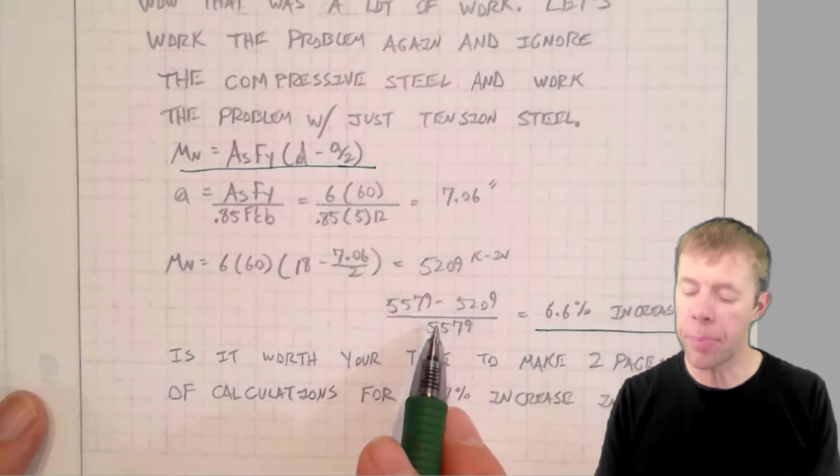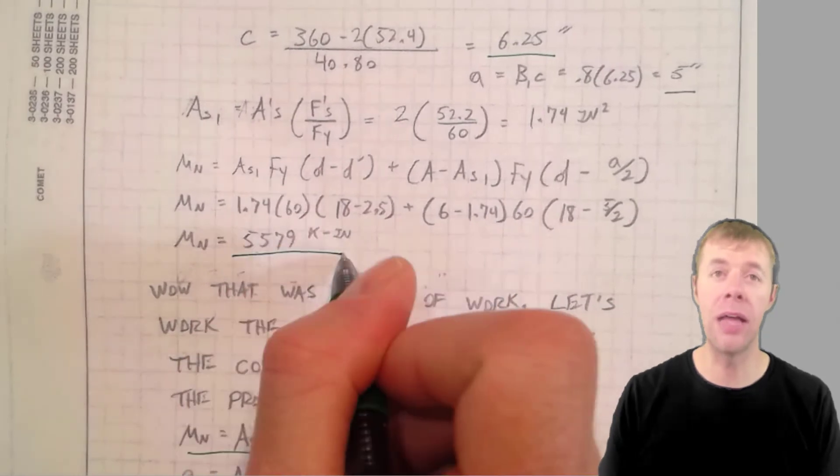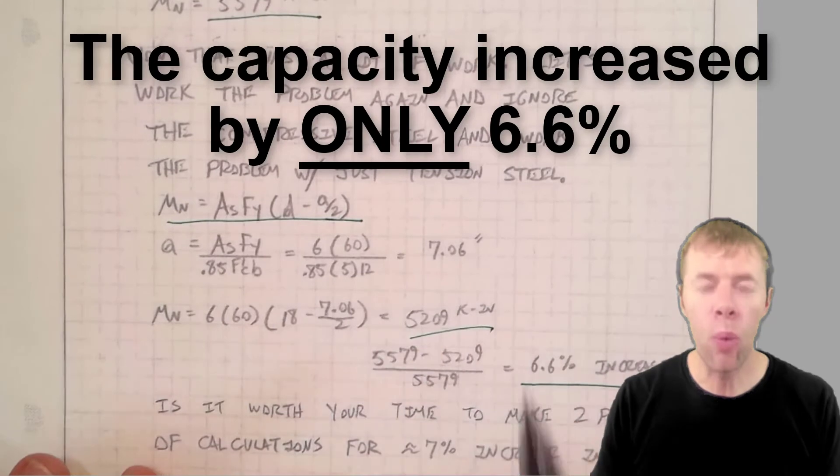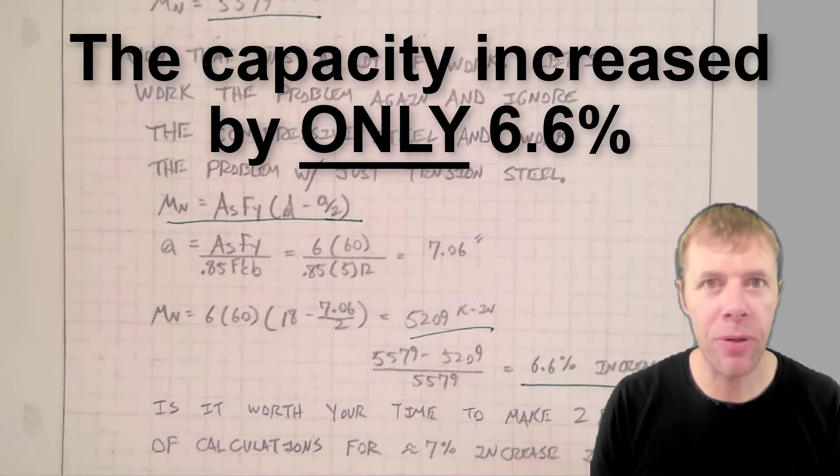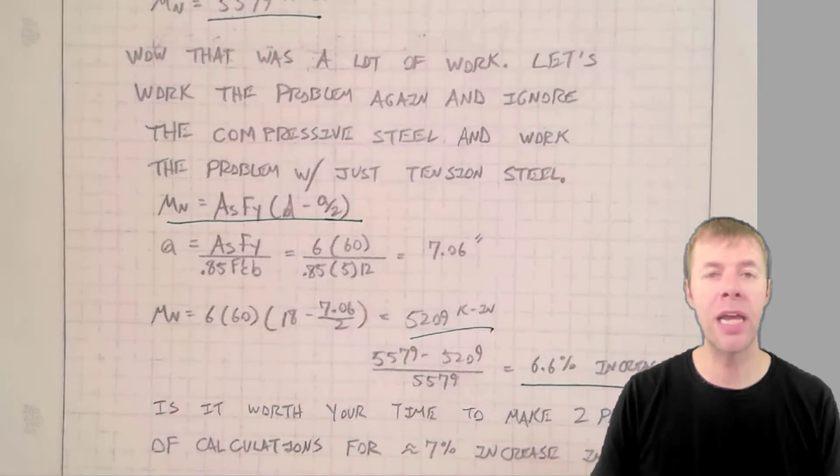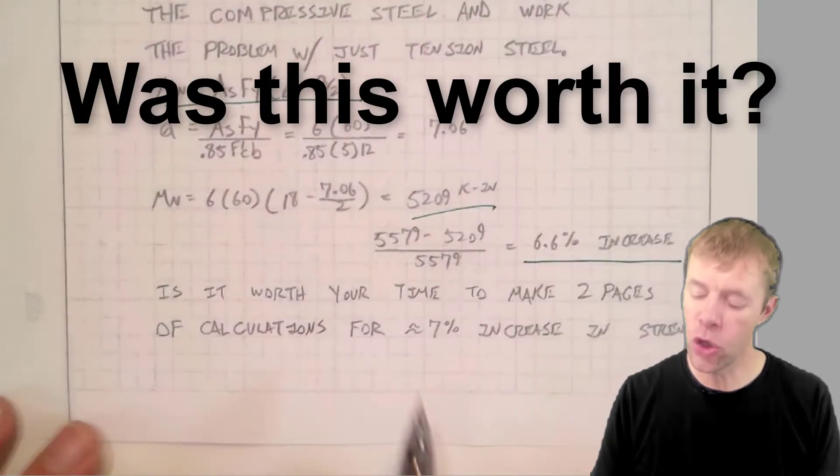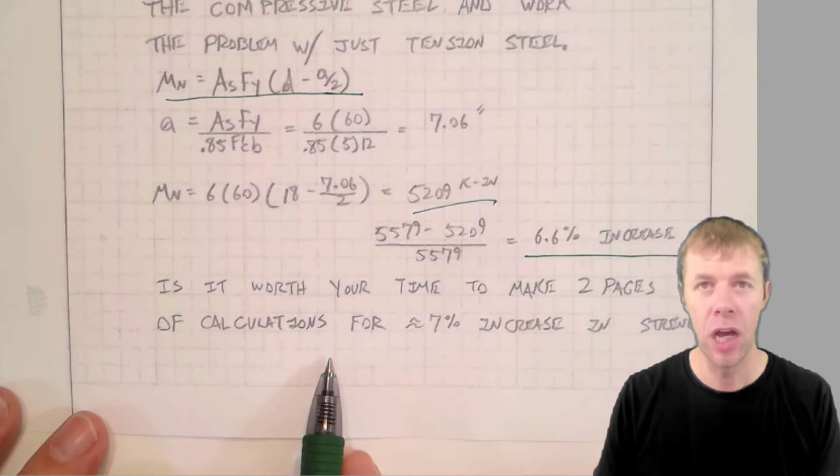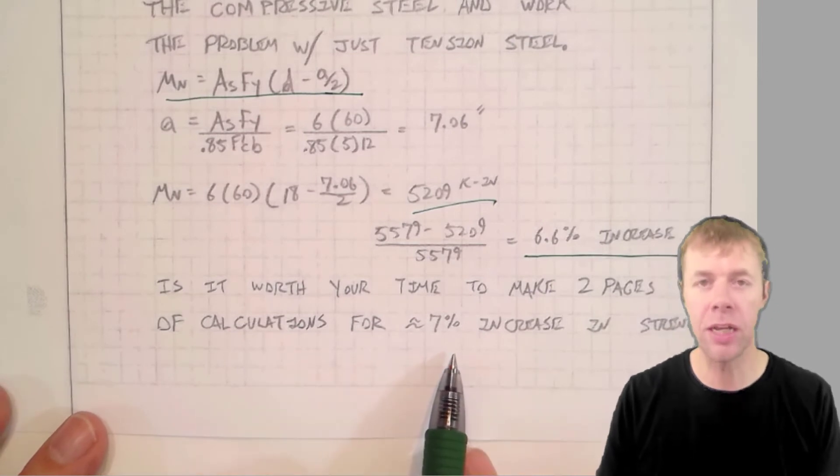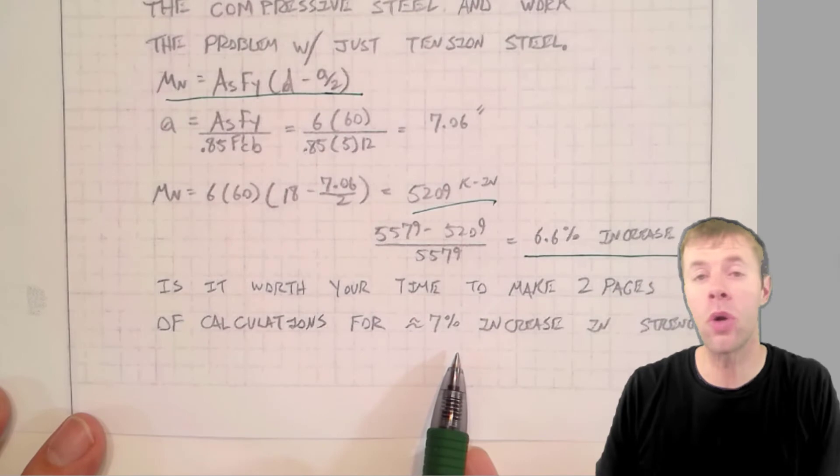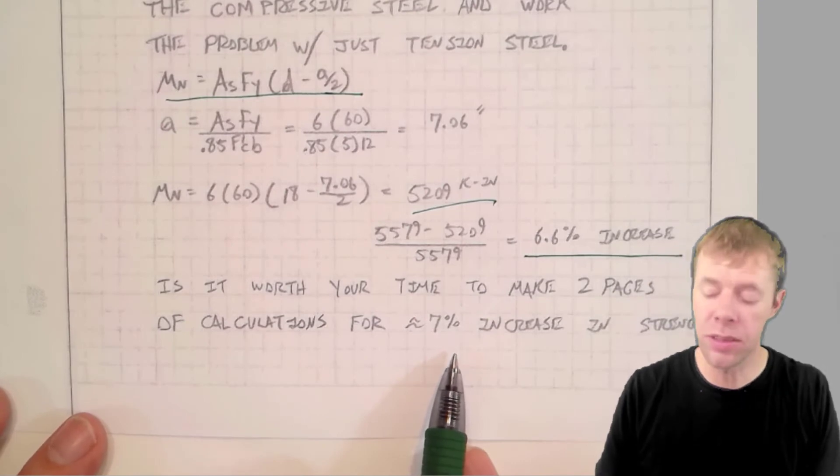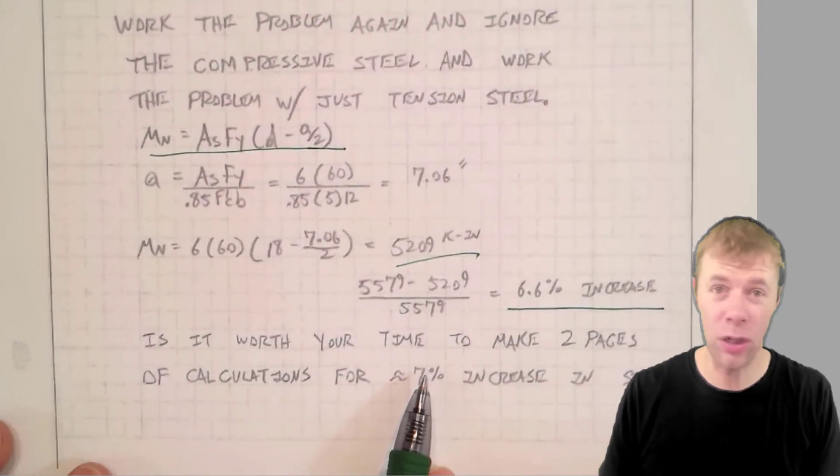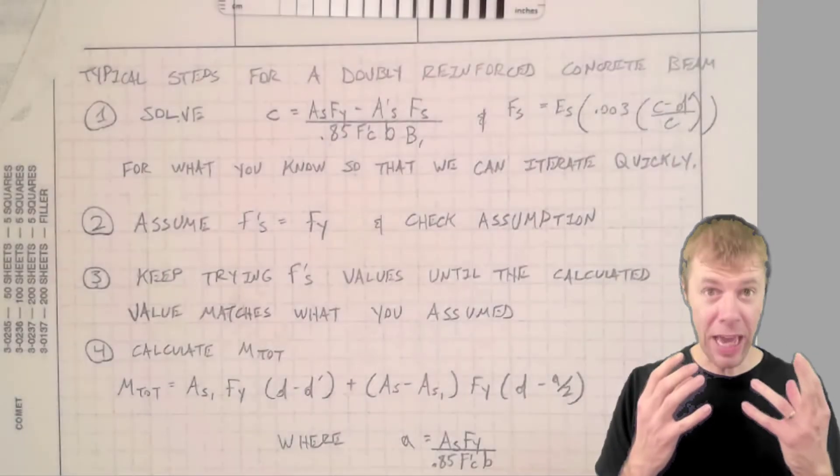We went up by 6% by taking into account the compression steel. Is it worth your time and two pages of calculations for about a 7% increase in strength? I want you to do this as you work other problems. It doesn't take long to work it this way, and you'll find your strength doesn't go up by much.